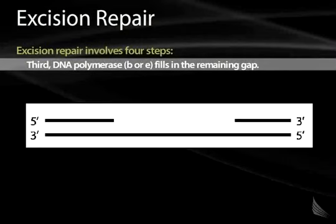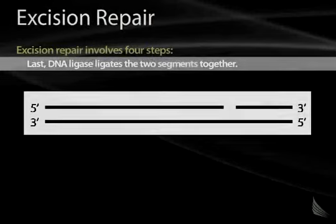The third thing that happens is a DNA polymerase comes in and fills in the gap where there are no paired nucleotides. In mammalian cells, this is beta or epsilon DNA polymerase. The last thing that happens is DNA ligase comes and ligates those two segments of DNA together. Now we've repaired the sequence — we've removed the mismatched nucleotide and replaced it with the correct base pairing stretch of nucleotides.